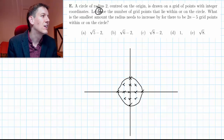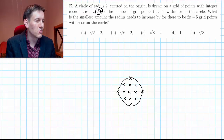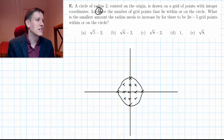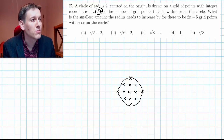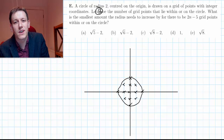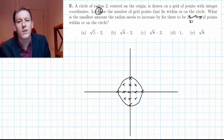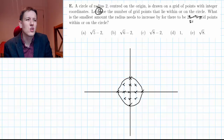So n is 13 — it's just 13. The question asks: what is the smallest amount the radius needs to increase by for there to be 2n minus 5 grid points within or on the circle? Well, 2n minus 5 is just 2 times 13 minus 5, which is 26 minus 5, so it's just 21.